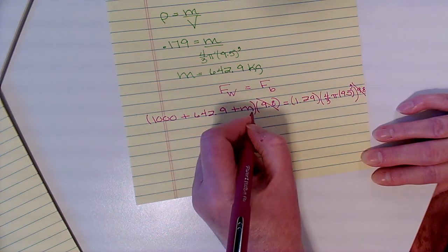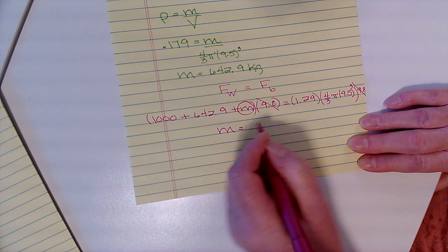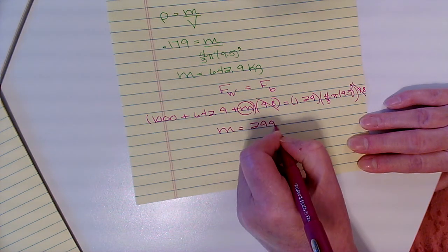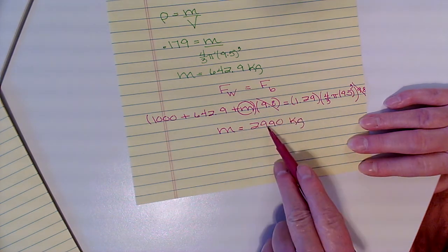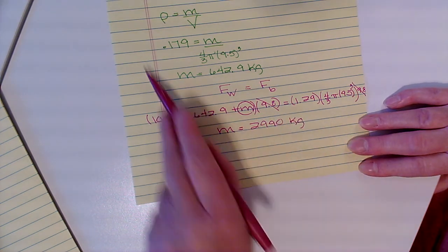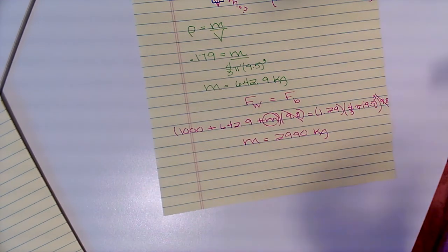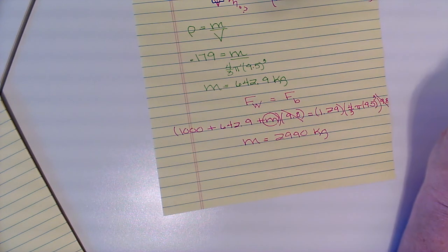I am solving for this extra mass. For that extra mass, I get 2,990 kilograms. That means I can add this many more kilograms to the balloon structure, like maybe put it in the basket, and my balloon would still float. But once I got above 2,990 kilograms, then my balloon would not float anymore.